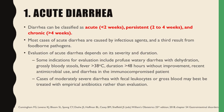So first, let's talk about acute diarrhea. Diarrhea can be classified as acute, persistent, and chronic. It is acute when the symptoms have lasted for less than 2 weeks, persistent if the symptoms or diarrhea has been happening for the past 2-4 weeks, and chronic if diarrhea has been there for more than 4 weeks.